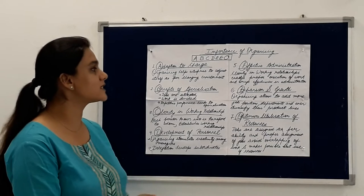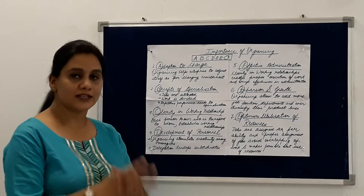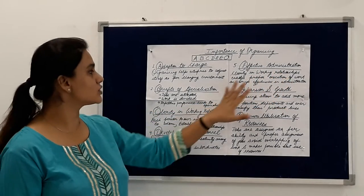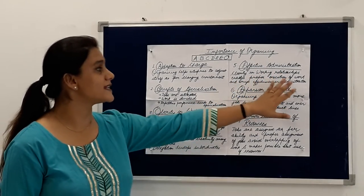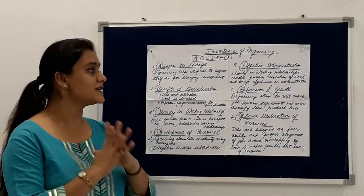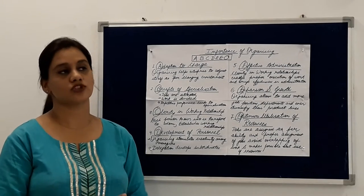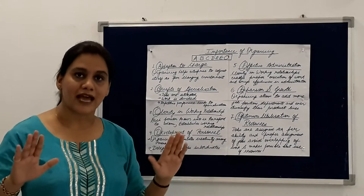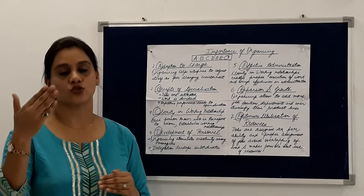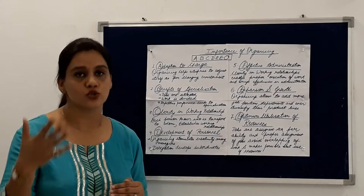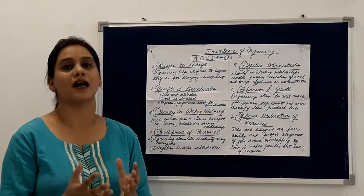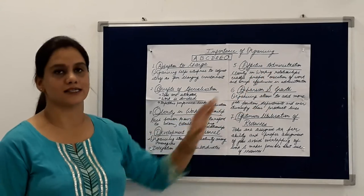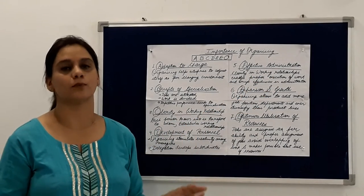The fifth one is effective administration. There is clarity in working relationships and it enables proper execution of work and brings effectiveness in the administration because there is clarity of jobs. There is clarity about who has to do which work and who has to report to whom, so the working part is very clear because of organizing and there is no confusion among the employees.